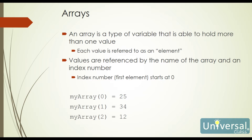As we discussed in a prior lesson, a variable is nothing more than a named space in memory that can hold a value, and a variable can only hold one value. However, we do have a special type of variable called an array that is able to hold more than one value. Each value is going to be referred to as an element. The values are going to be referenced by the name of the array and then also an index number, and the index number is going to start at zero — that's going to be our first element in our array.